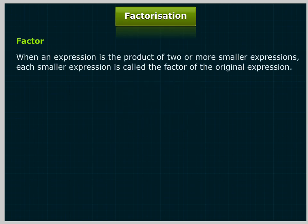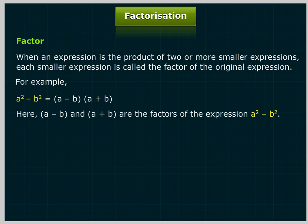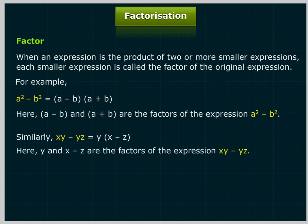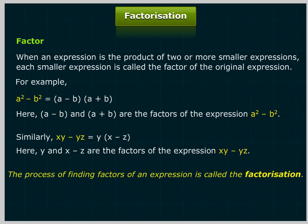Factorization. When an expression is the product of two or more smaller expressions, each smaller expression is called a factor of the original expression. For example, a² - b² = (a - b)(a + b), where (a - b) and (a + b) are the factors. Similarly, xy - yz = y(x - z), where y and (x - z) are the factors of xy - yz. The process of finding factors of an expression is called factorization.